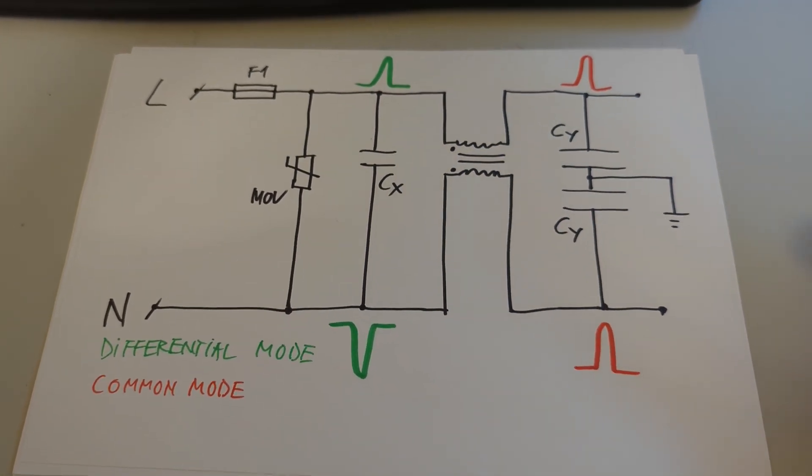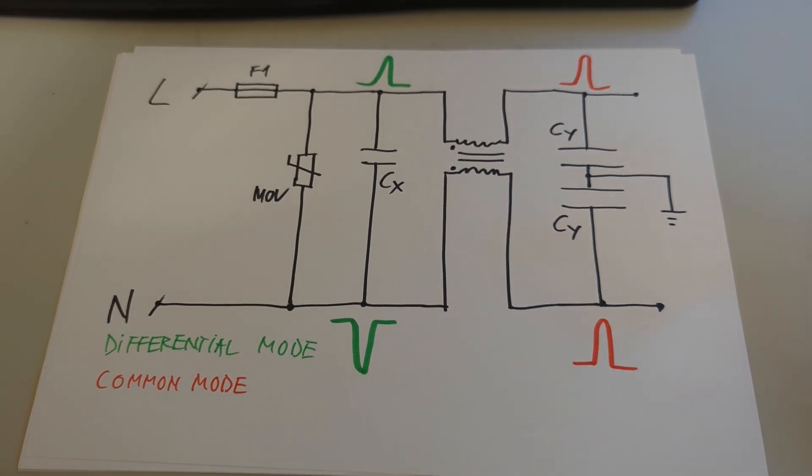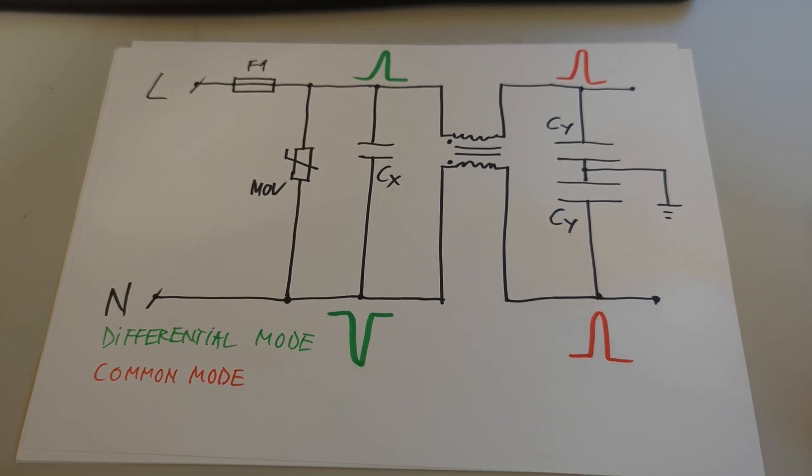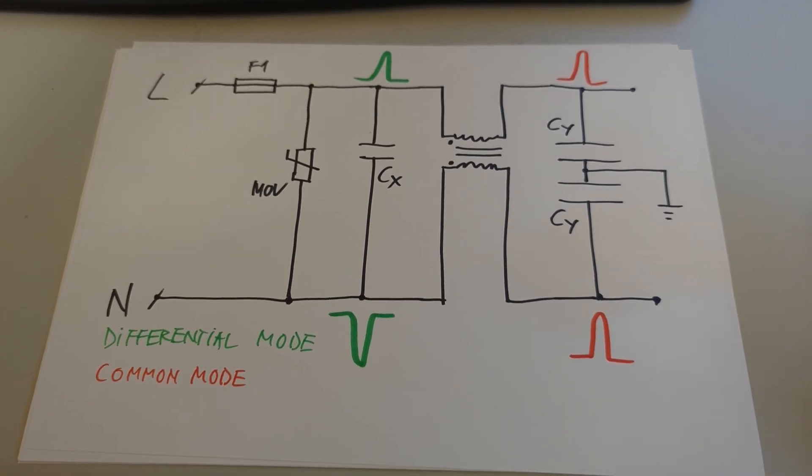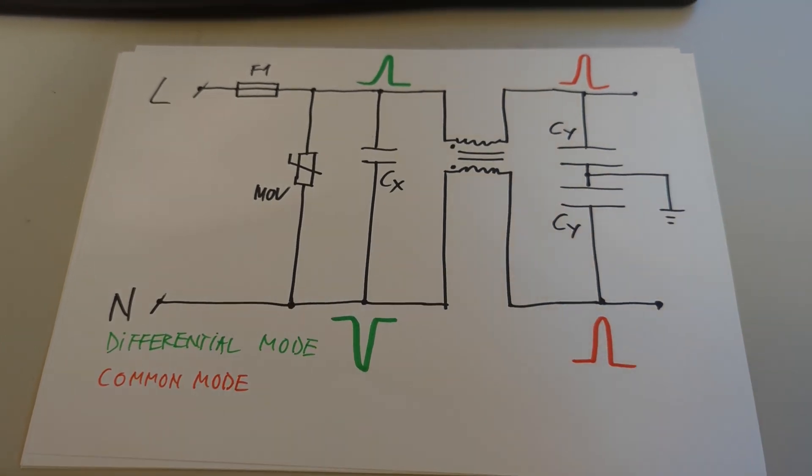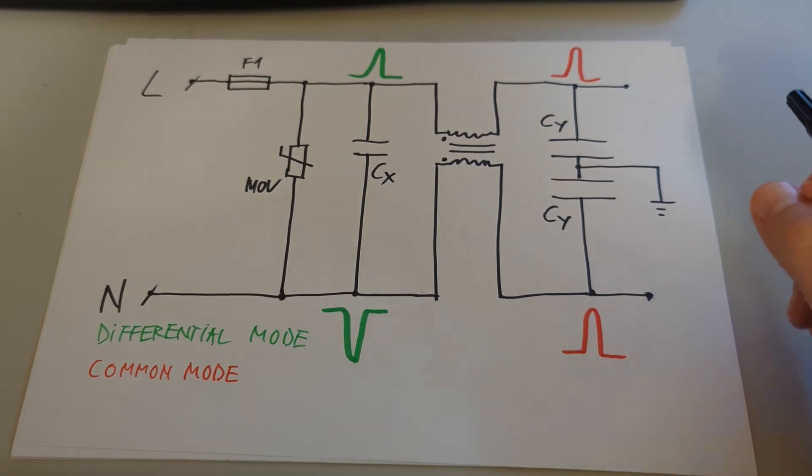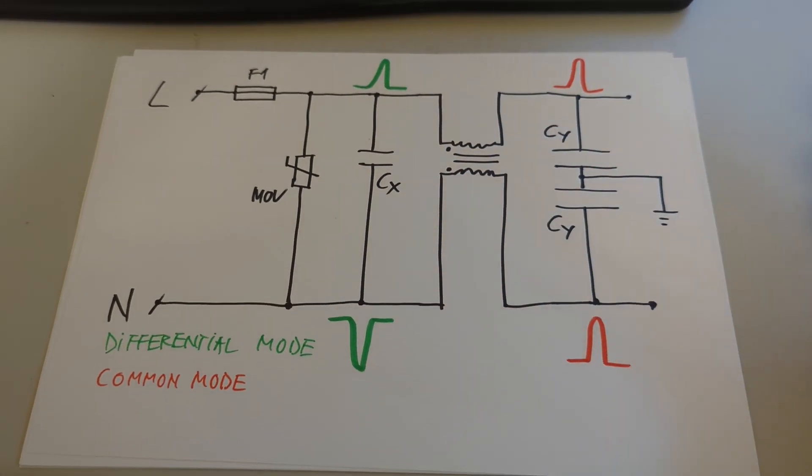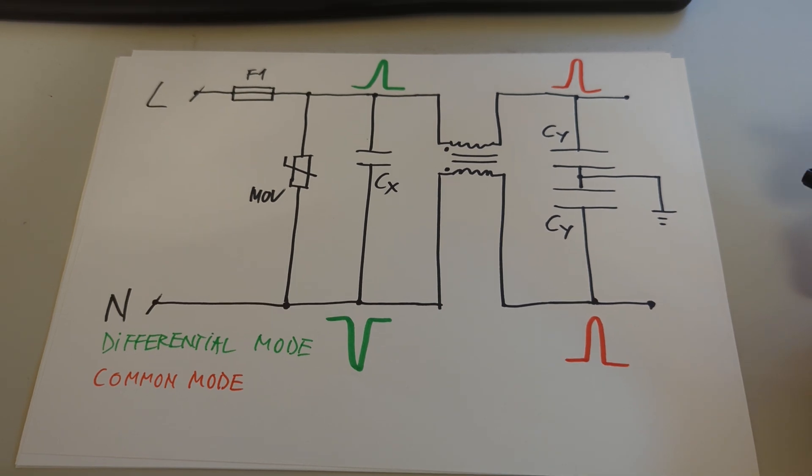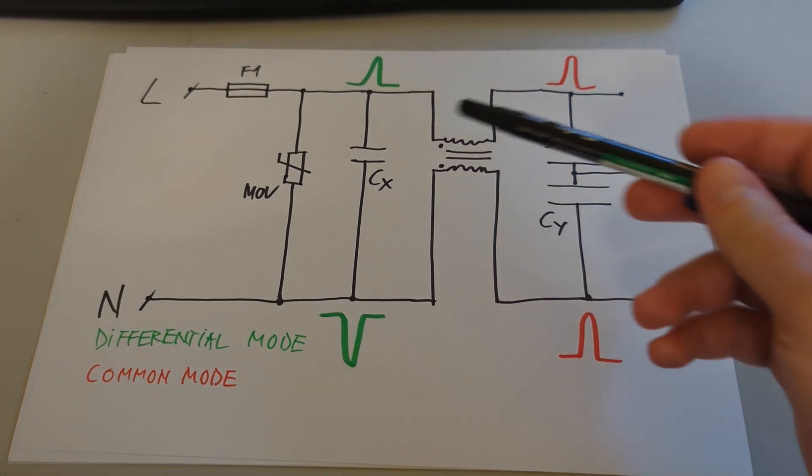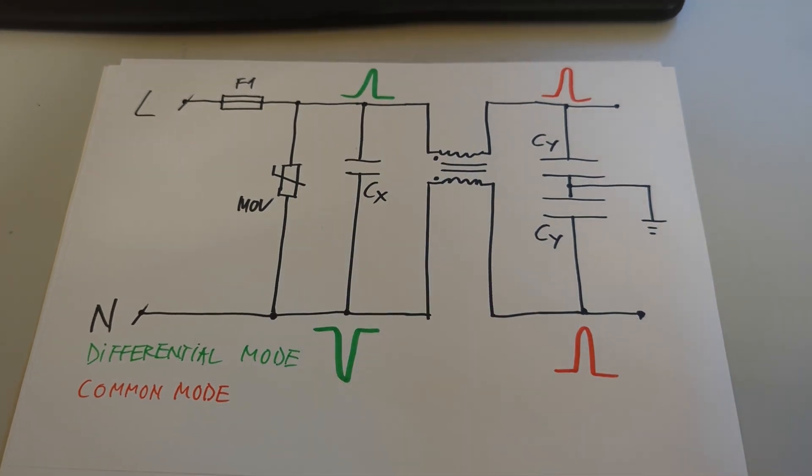And if you want a real life example, maybe you've played with some old radios and you notice that especially on distant AM stations, as soon as somebody would turn the lights on and off, you would hear a pop in the speakers. Well, that's where we get into EMI issues and that's where such filters could help, basically.